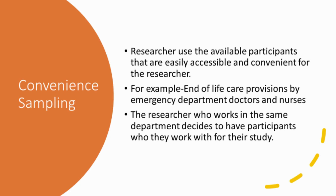In convenience sampling, using the same topic, the researcher would just pick participants they already work with. It's called convenience sampling because it's actually convenient — you don't have to advertise the study, spread by word of mouth, or try to access a particular group. You already have access to the sample because you work with them, so you can simply ask them to share their experiences.